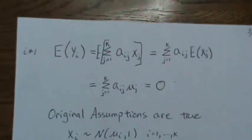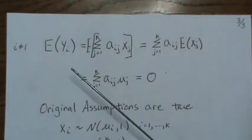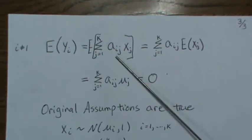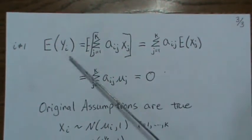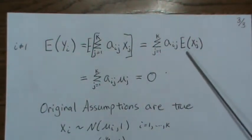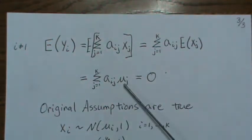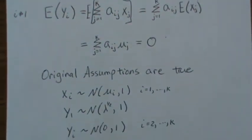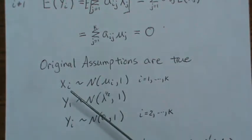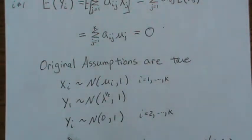This helps us find the mean of any other yi, for i not equal to one. The expected value of the i-th element equals the i-th row of A times the x vector, and bringing the expectation in gives the sum of that row's entries times μj. But from what we just showed, this is zero. So the means of all the other yi's are zero. This confirms our original assumptions: the xi's are Normal(μi, 1), y1 is Normal(√λ, 1), and all other yi's are Normal(0, 1).